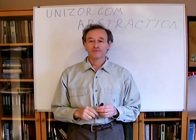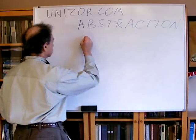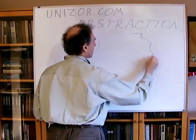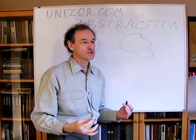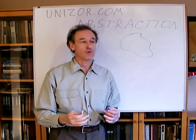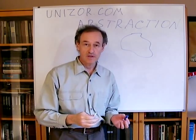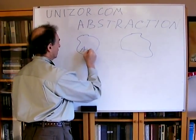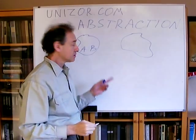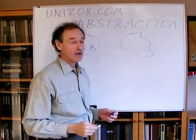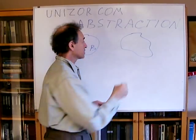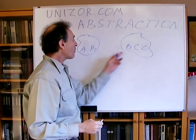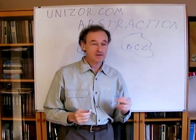Let's consider you have certain objects — one object, maybe a real object, and another object. You would like to know certain properties or think about qualities of these objects. You notice that the object on the left has properties A and B, and the object on the right has properties B, C, D, E. The property B is common to both objects.